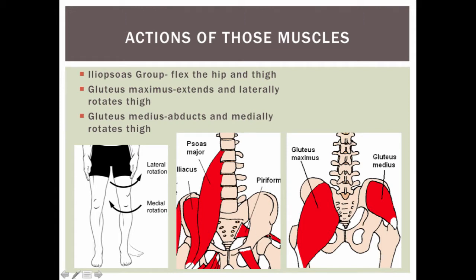Actions of these muscles: the iliopsoas group flexes the hip and the thigh. The gluteus maximus helps to extend and laterally rotate the thigh — seen here, helping to move the foot out. The gluteus medius helps to abduct, moving the leg out, and then medially rotate the thigh, moving the foot back in.